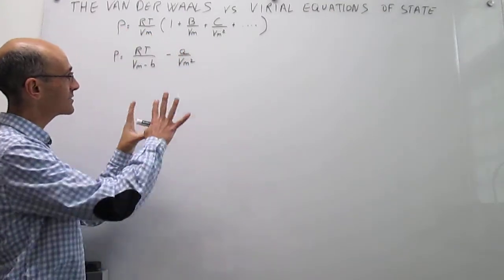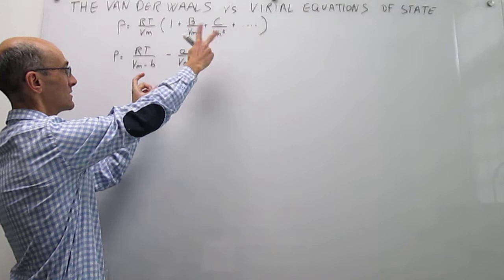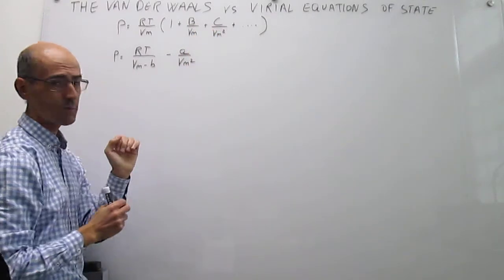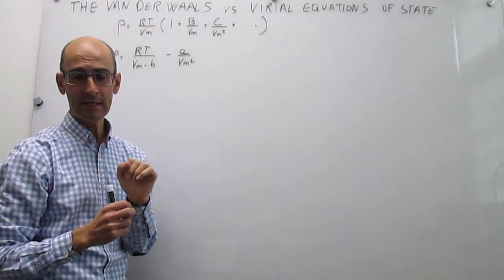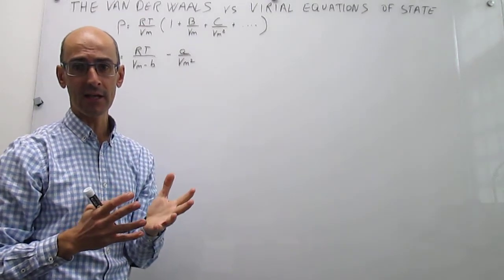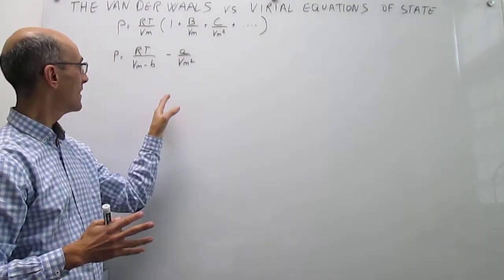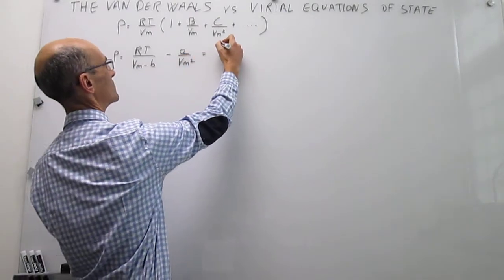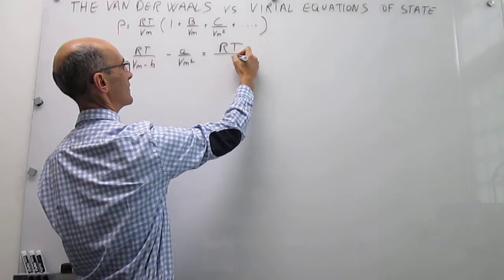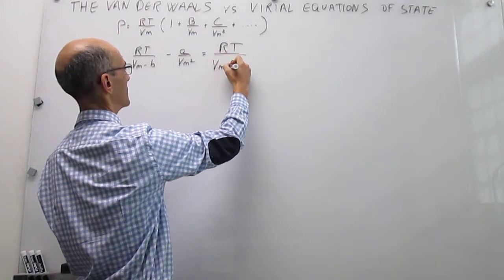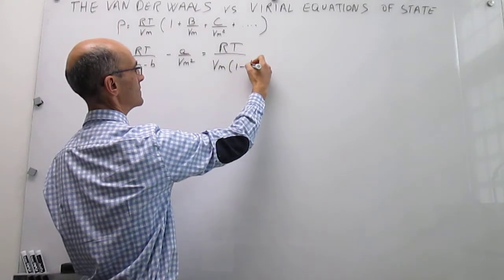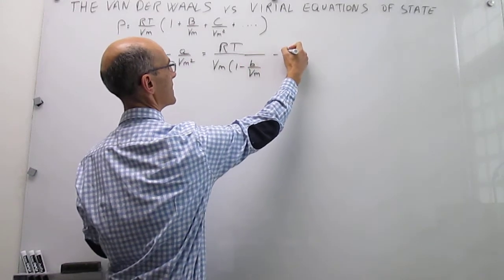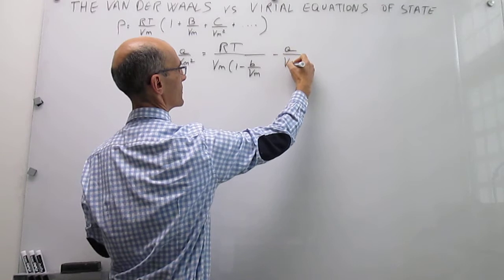Let's see if we can connect those coefficients between the equations. We start with the Van der Waals Equation of State and take a common factor of V_M in the denominator of that expression, giving RT over V_M times 1 over (1 minus b over V_M), minus a over V_M squared.